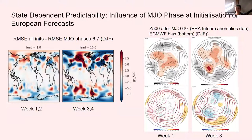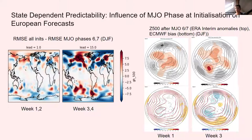To understand why this happened, we looked at the geospatial pattern of root-mean-square error. On these maps, the red regions are forecast better when the MJO is in phases six and seven, and blue regions are forecast worse. We can see, especially in weeks three and four, that in the North Pacific there is much better forecast skill, but this better skill doesn't make it across to Europe. We've been wondering how this relates to the increased bias of the ECMWF model over Iceland in the same MJO phase.